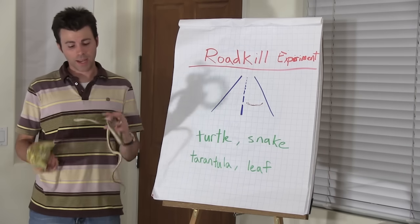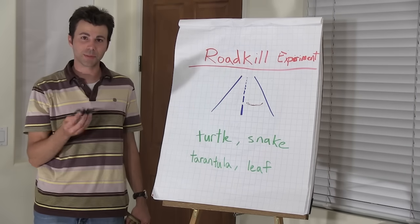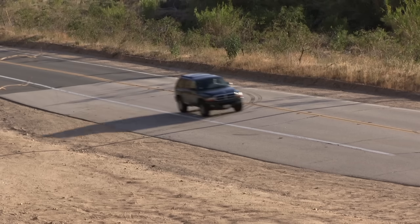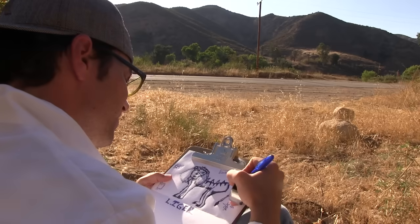So I got a rubber turtle and a rubber snake. I also got a rubber tarantula to spice things up a little bit. I basically alternated placing each on the shoulder of the road and I counted cars and meticulously collected data.